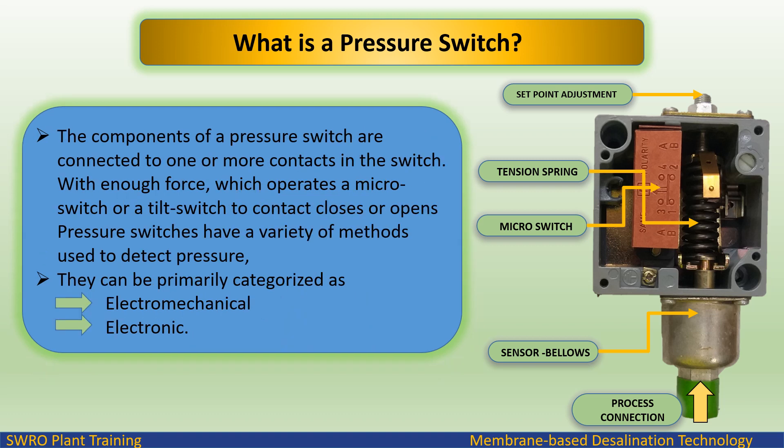The components of a pressure switch are connected to one or more contacts in the switch. With enough force, it operates a micro switch or a tilt switch to contact closes or opens. Pressure switches have a variety of methods used to detect pressure; they can be primarily categorized as electromechanical or electronic.